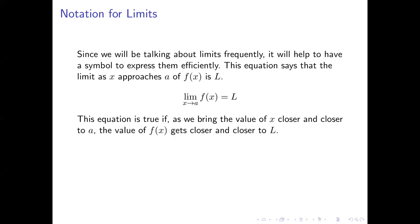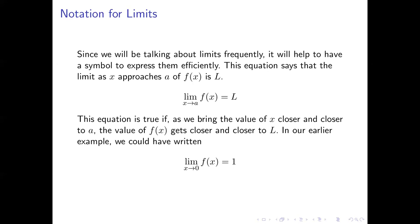The equation is true as long as when we bring the values of x — the input to our function — closer and closer to a, we find the value of f of x, the output of the function, getting closer and closer to the number L. Going back to that initial example with the table, we could write: the limit as x approaches zero of f of x equals one. That's because as the values of x got closer and closer to zero, the values of f of x got closer and closer to one.